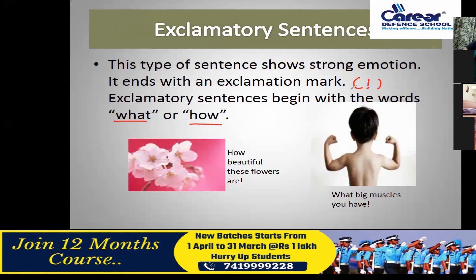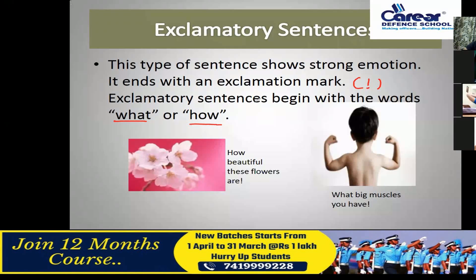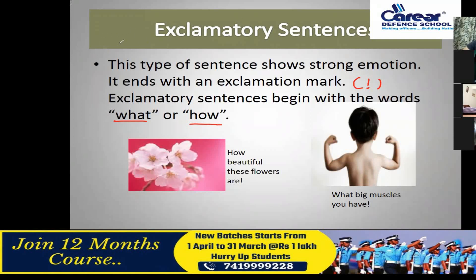Exclamatory sentences always end with a sign of exclamation and normally begin with 'what' and 'how.' Some sentences also contain words like 'hurray,' 'alas,' 'bravo,' 'yippee' — these words are also used to show strong emotion. For example: 'Hooray, we won the match!' 'Alas, we lost the match!' 'Bravo, you can do this!' These are all exclamatory sentences.